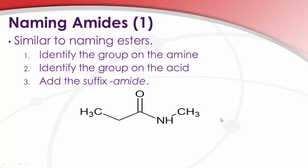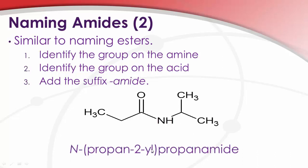So, we have N-methyl, one, two, three, propanamide. Pretty simple, really. N-methyl, and then just be sure that the side with the carbonyl, regardless of its length, will be the base name. So, in this case, the length of these, again, is not relevant. So, this is still propanamide, but this would be propan-2-yl, N-propan-2-yl-propanamide.